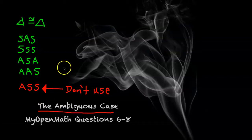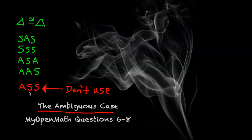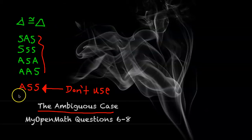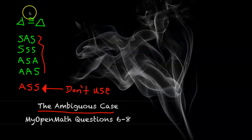The ambiguous case means that this information alone is not sufficient to create one unique triangle. Side-angle-side, side-side-side, and angle-side-angle are all sufficient to make a unique triangle, and that's why having that information alone would prove two triangles are congruent. Angle-side-side is insufficient. We're going to look at the ambiguous case now by looking at MyOpenMath questions 6 through 8.